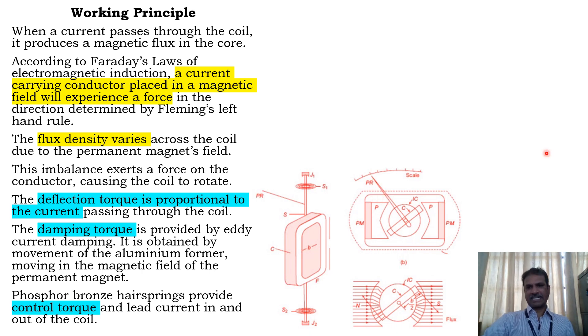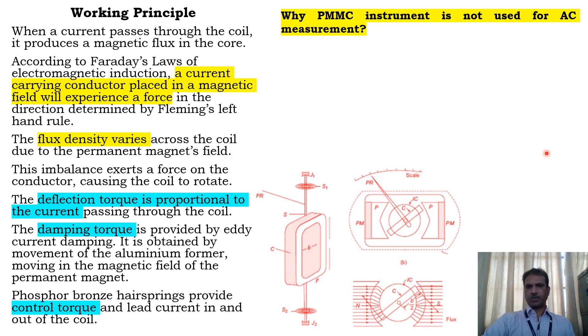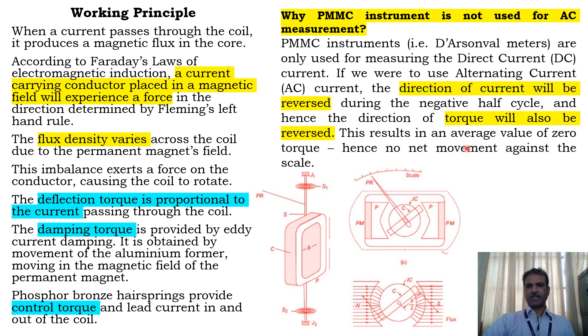There is a common question: Why is PMMC instrument not used for AC measurement? PMMC instruments are D'Arsonval meters and are used only for measuring DC. If we use AC, the direction of the current will be reversed during the negative half cycle, and hence the direction of the torque will also be reversed.